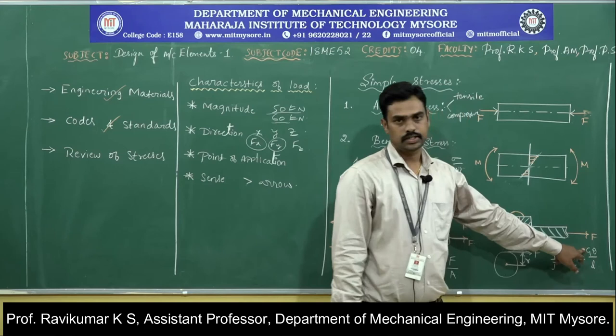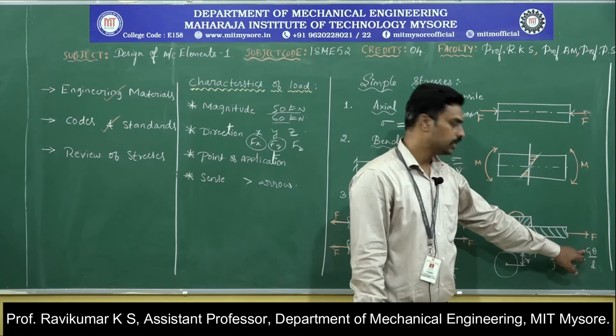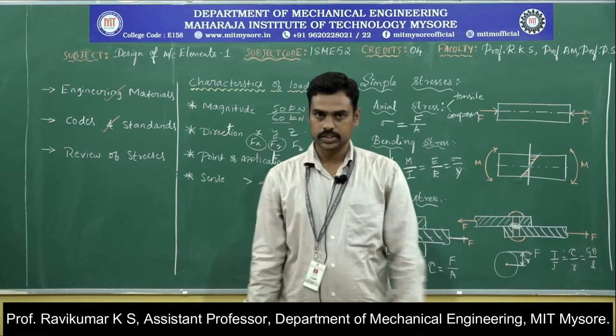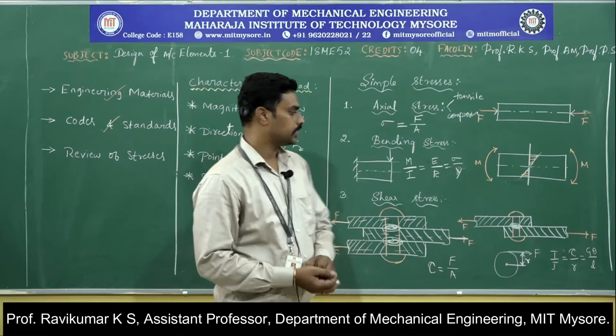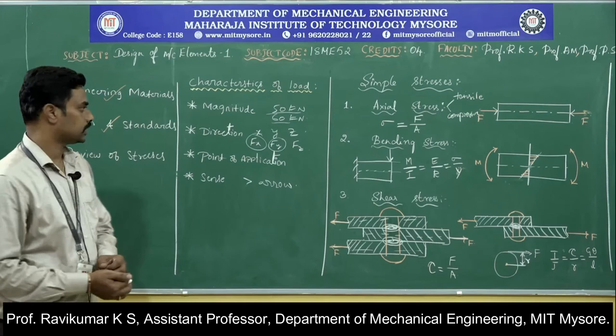G is the rigidity modulus, a property of the material denoted in N/mm². Theta (θ) is the angle of twist, usually denoted in degrees but converted into radians. L is the length of the member or shaft. This is the review of the stresses.